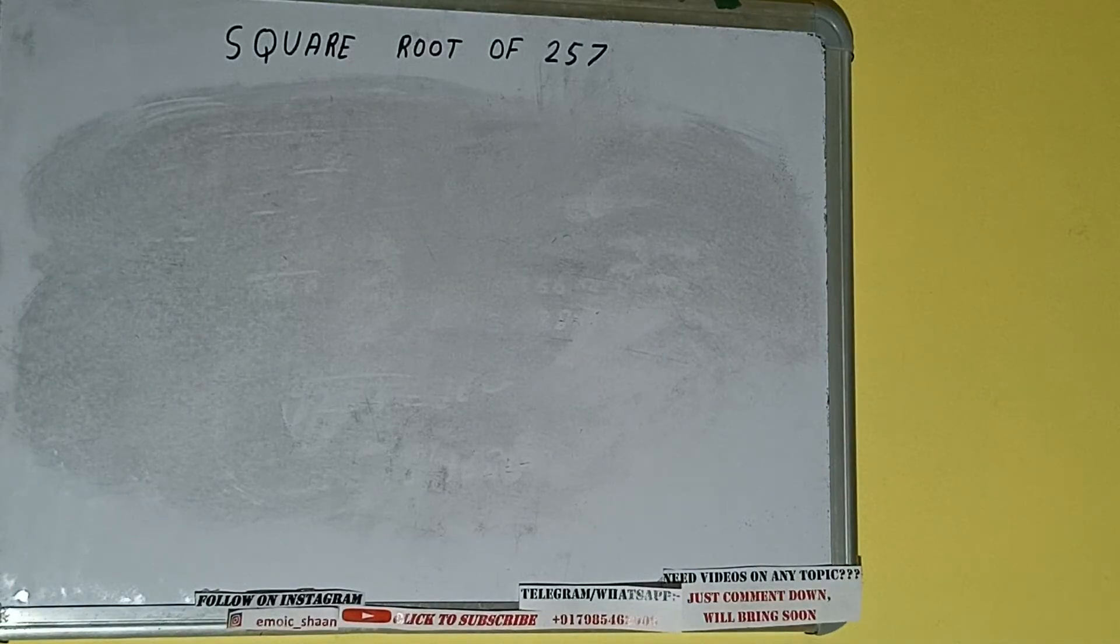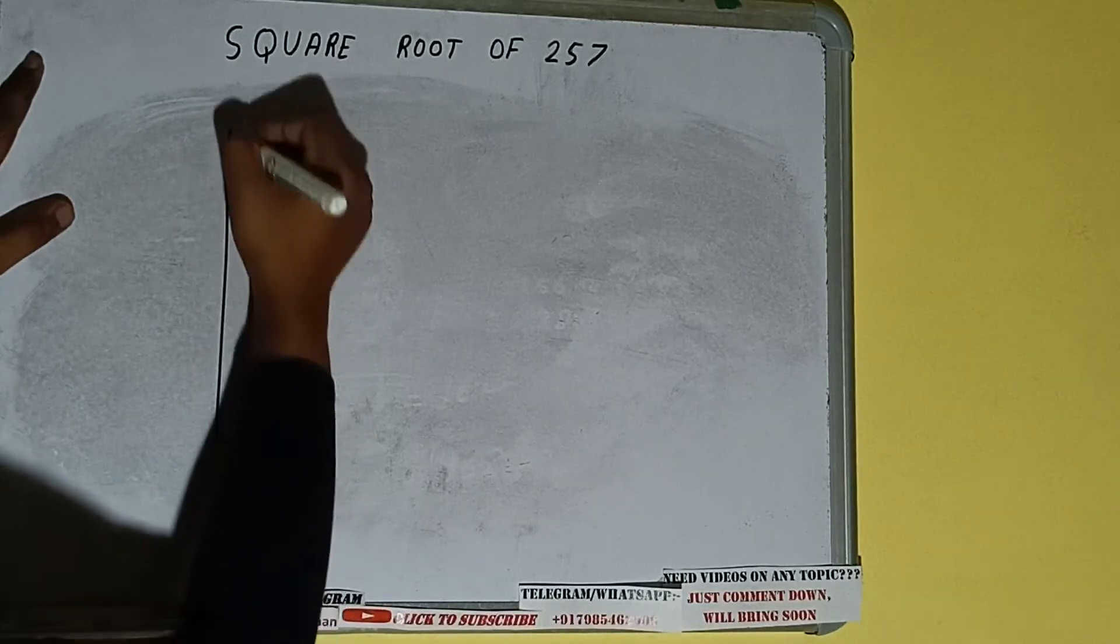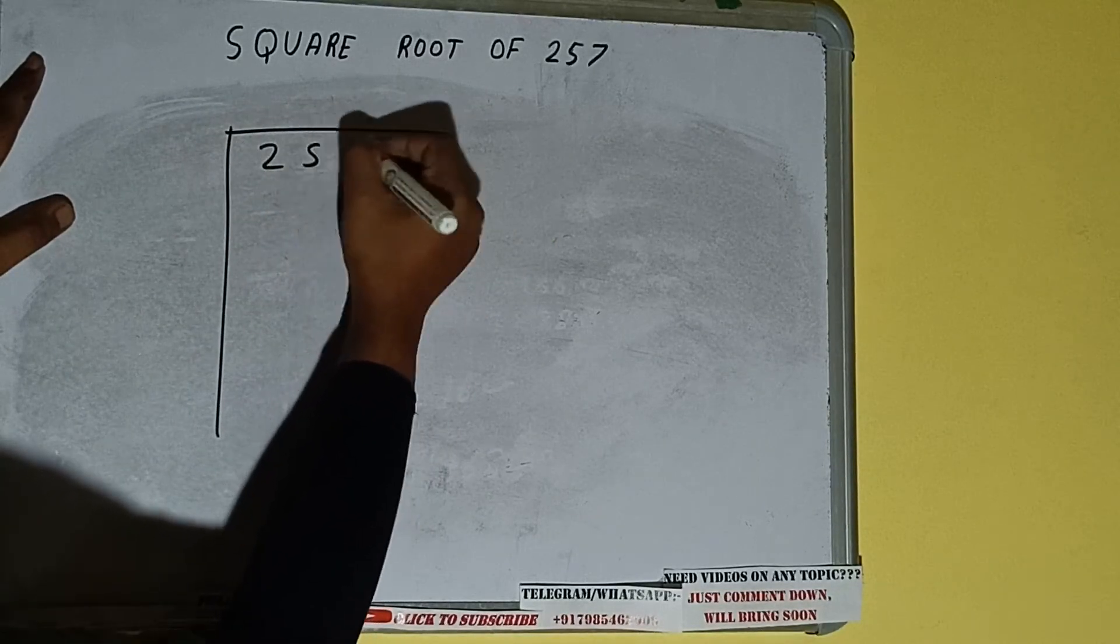Hello friends, in this video I'll be helping you with the square root of the number 257. So let's start. First of all, we need to write the number like this. The next thing we need to do is form pairs from the right-hand side.